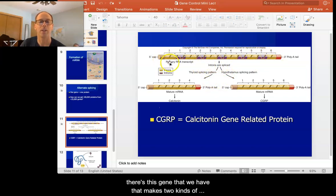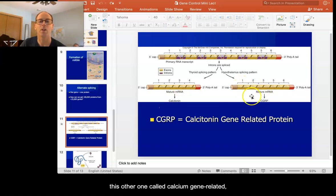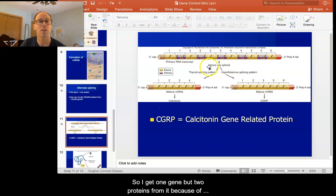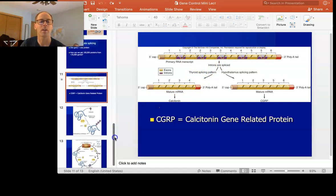So an example of this, there's this gene that we have that actually makes two kinds of proteins. This one called calcitonin, which is used to regulate blood calcium levels. And then this other one called calcitonin gene related protein. This one controls inflammation in the membranes surrounding the brain. So in the thyroid gland you make calcitonin. You do alternative splicing in the brain and the hypothalamus to produce this protein. So I get one gene, but two proteins from it because of being able to splice out exons along with introns.